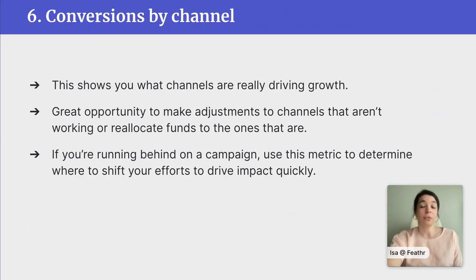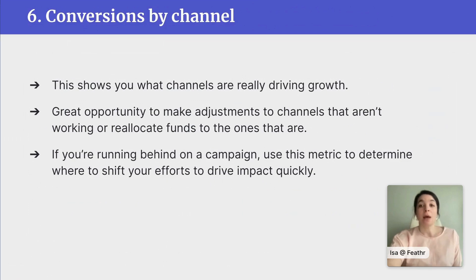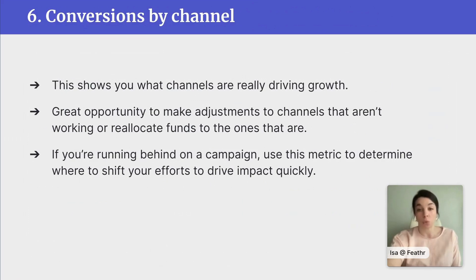Number six is conversions by channel — analyzing how many donations, volunteer signups, or other conversions are coming from each platform so you can see where growth is really coming from. You'll see which channels are underperforming, and this is a great opportunity to look more closely at the campaigns you have running on those channels and maybe make some adjustments. Whichever channels are performing the best might be where you have more supportive audiences, and you might want to consider investing more in those areas. This is also a great way to make a plan for hitting your goals. If you're running behind on a volunteer recruitment initiative but you know that Facebook is one of your top-performing channels for volunteer signups, you can put a little more budget behind your Facebook ads to hit that target.